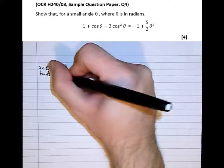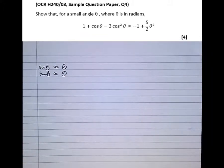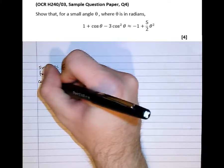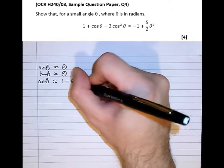Tan theta the same, so when theta is small, tan theta is approximately equal to theta. And then cos theta, when theta is small, equals 1 minus theta squared over 2.